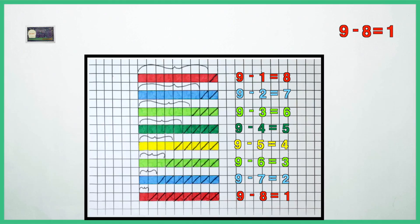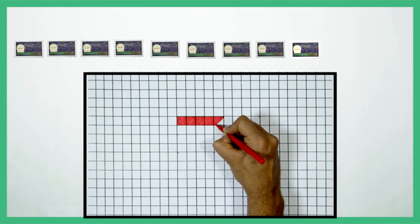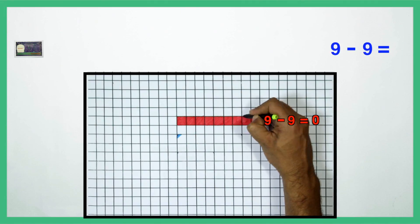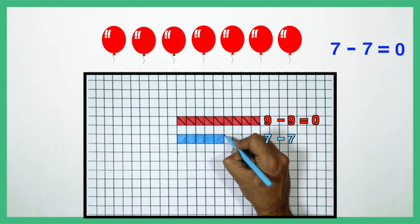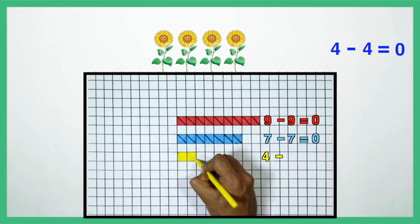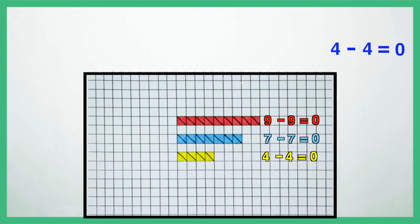Here is an interesting fact. If we take away 9 from 9, what is left? Nothing or 0. 7 minus 7 is 0. 4 minus 4 is 0. And so on. In other words, when the entire quantity has been taken away, we are left with 0.